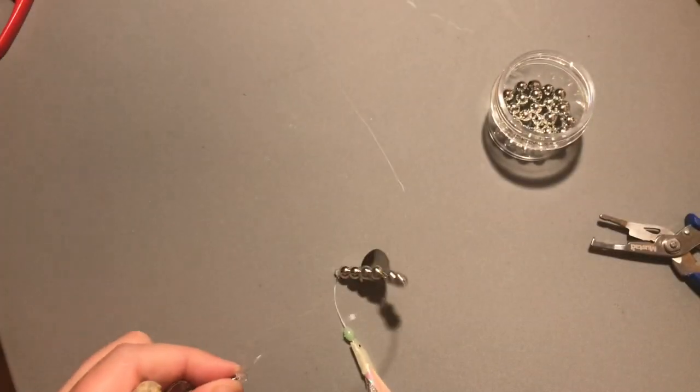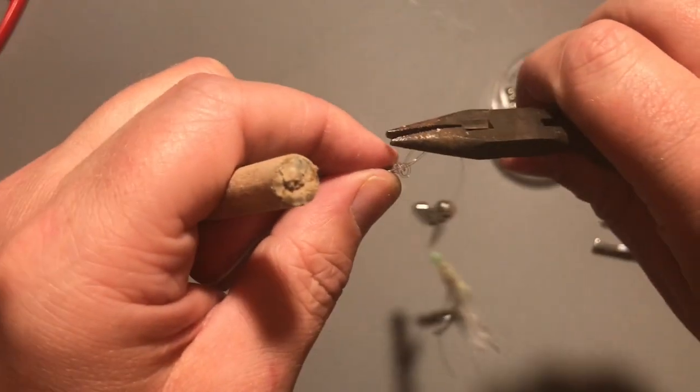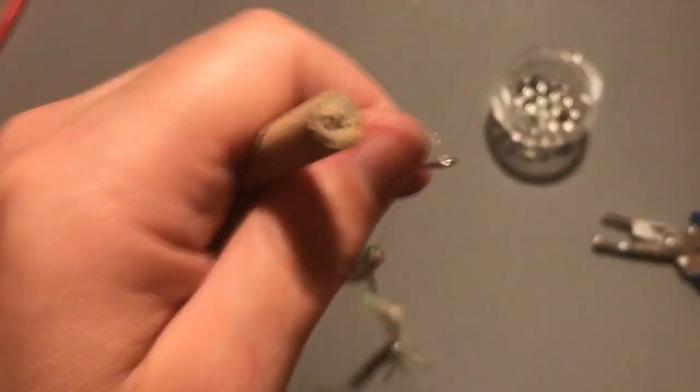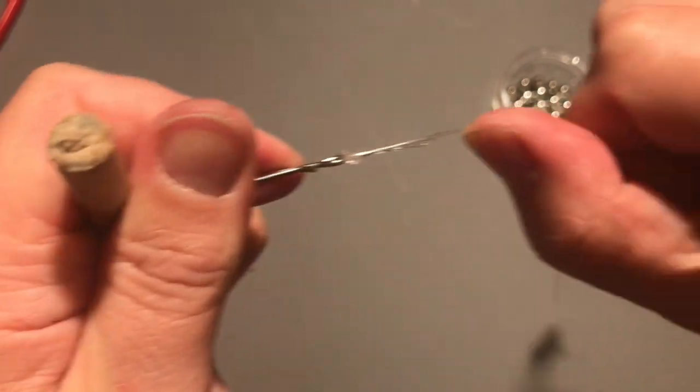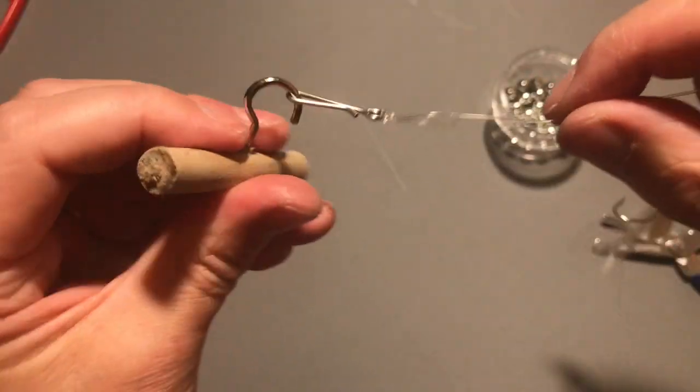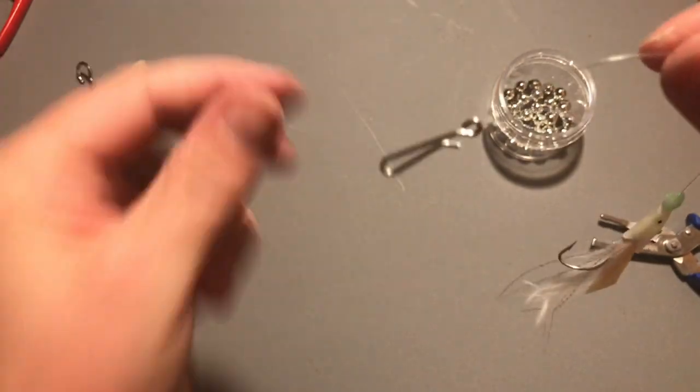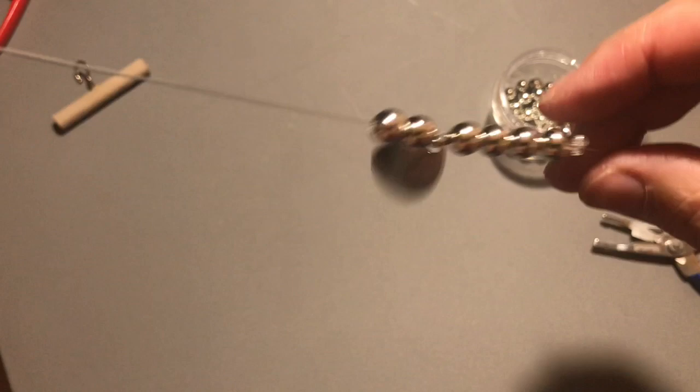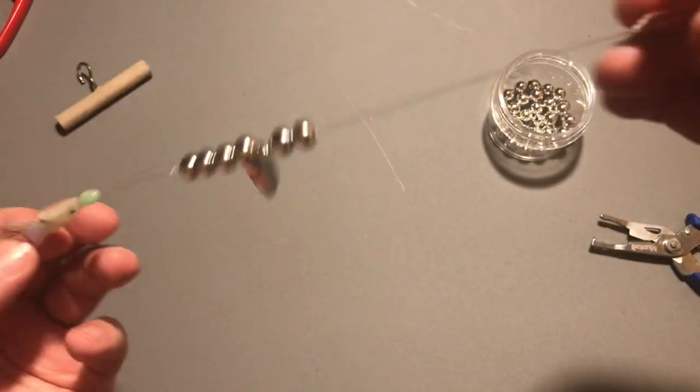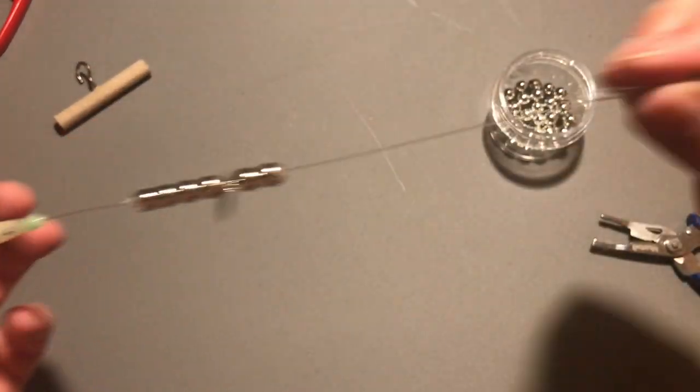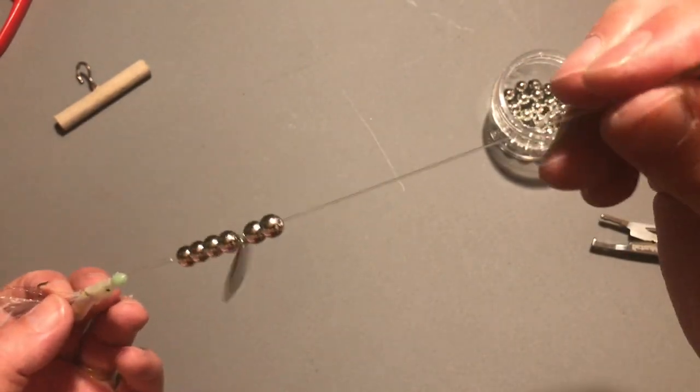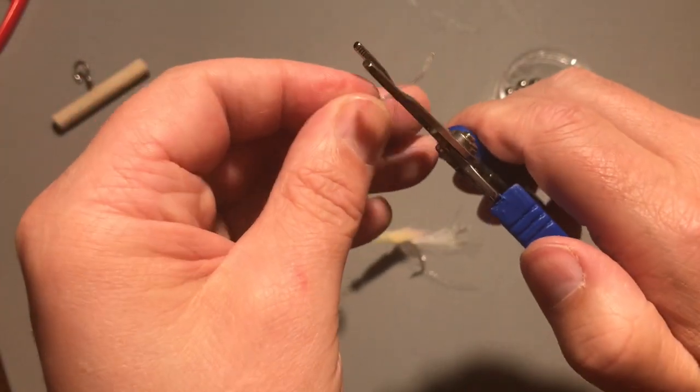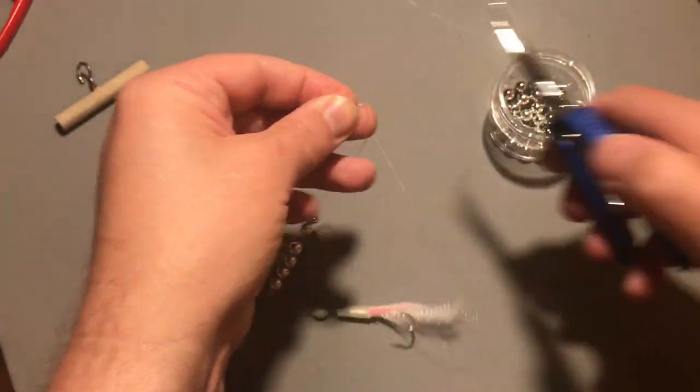Pulling the tag end just to make sure it's cinched down properly and that's your quick link put on, locking everything into place and that's giving you a good 8 to 10 inches of dropper or a snood which you can then quickly attach to your rigs for quick changing.